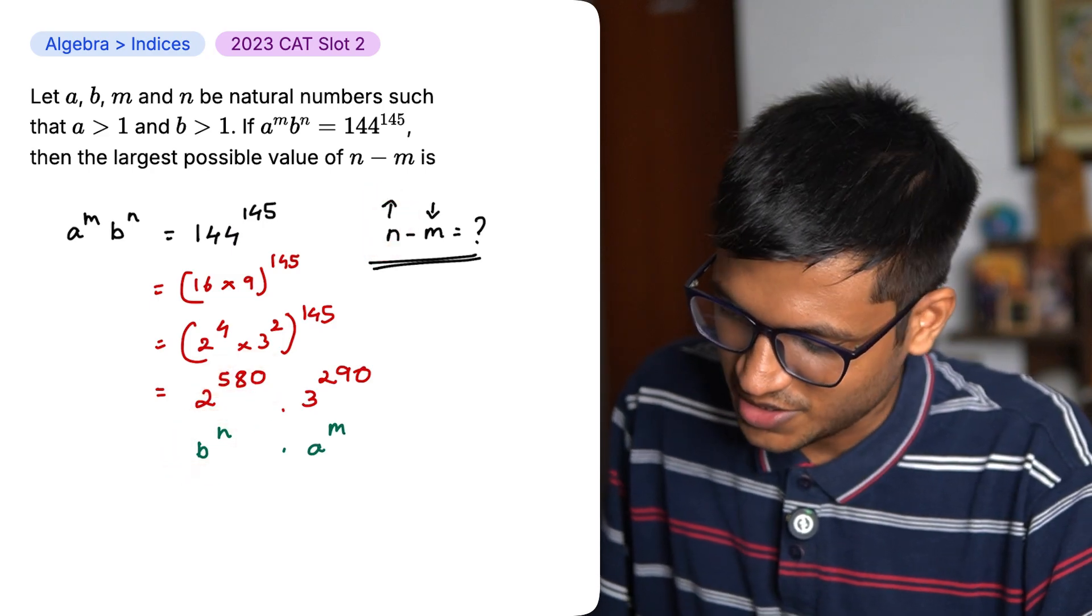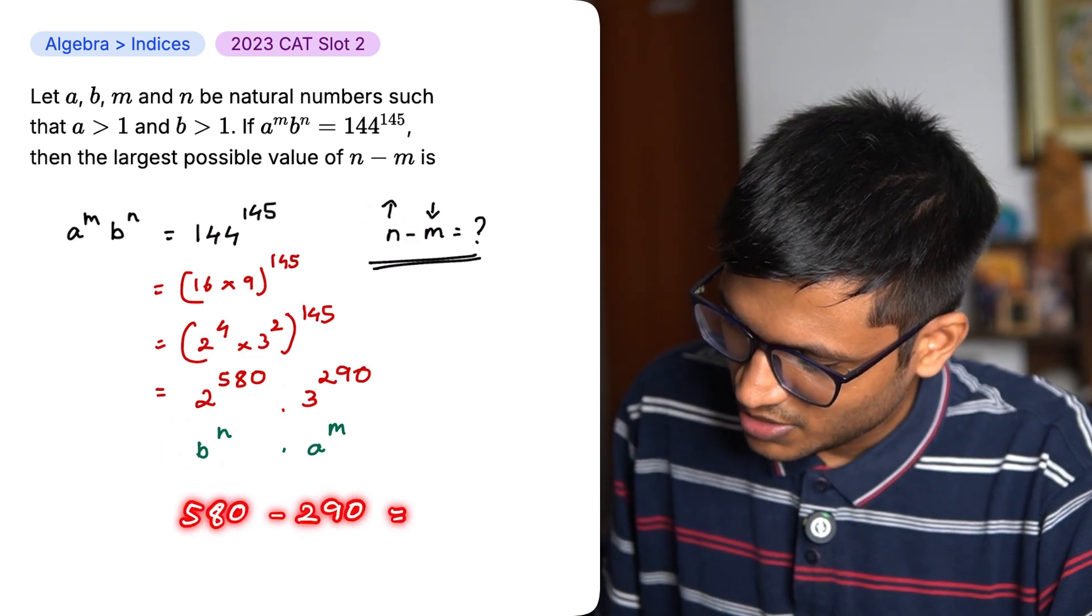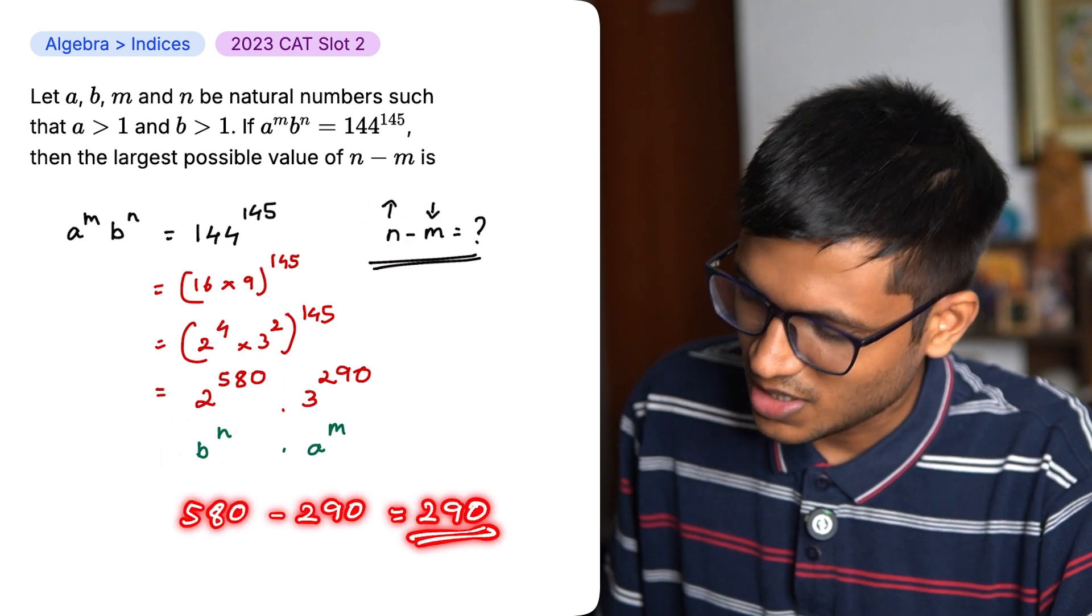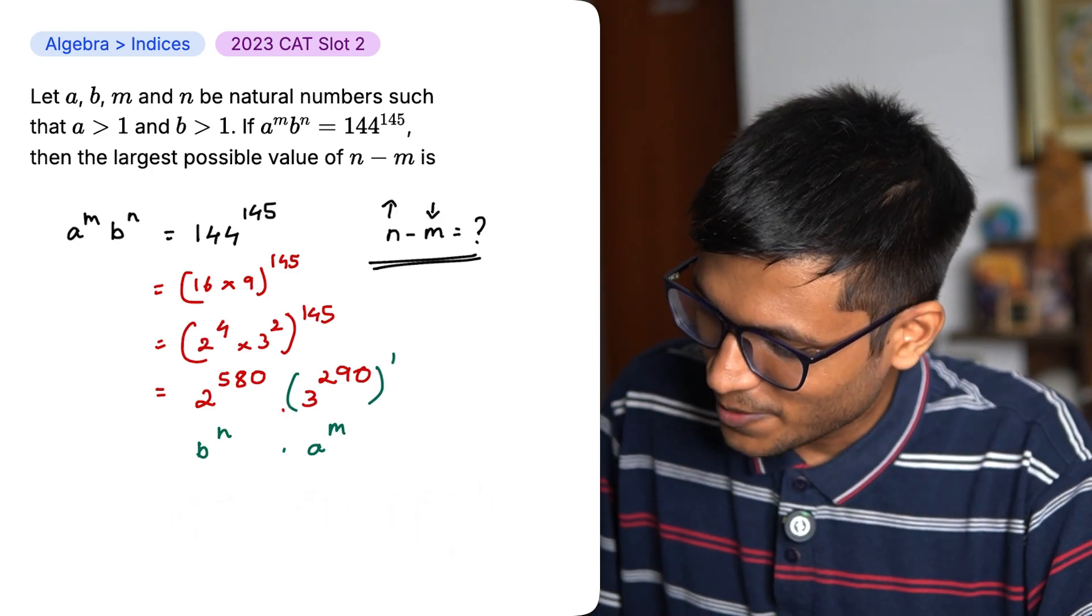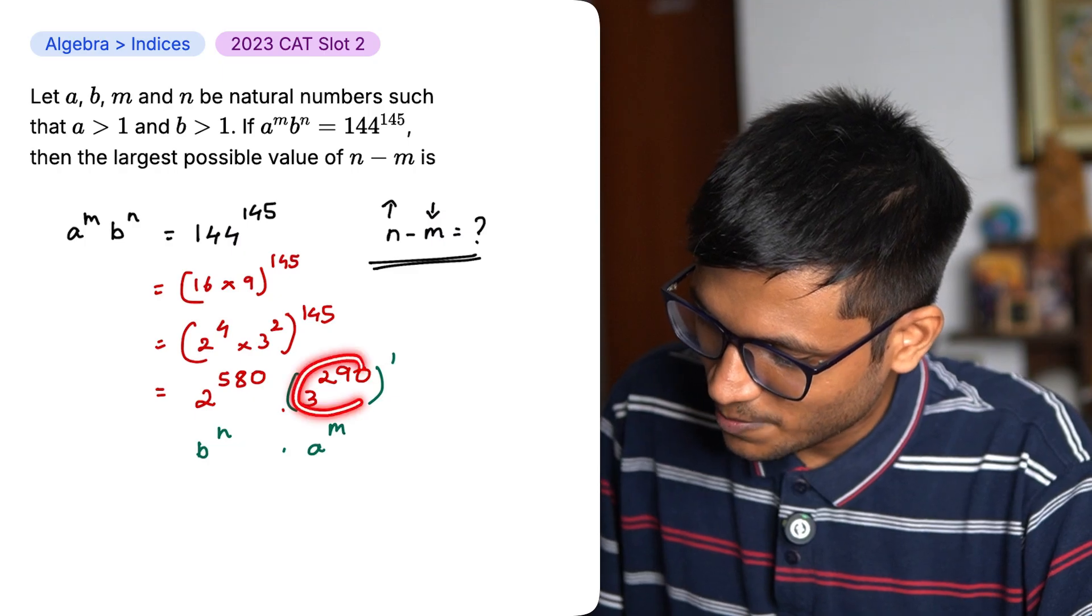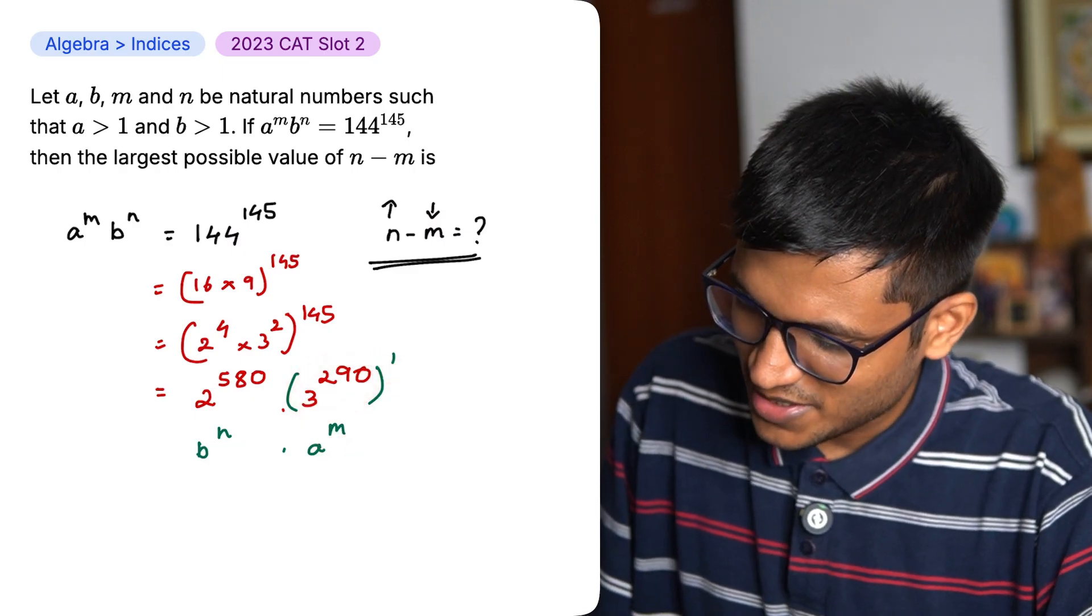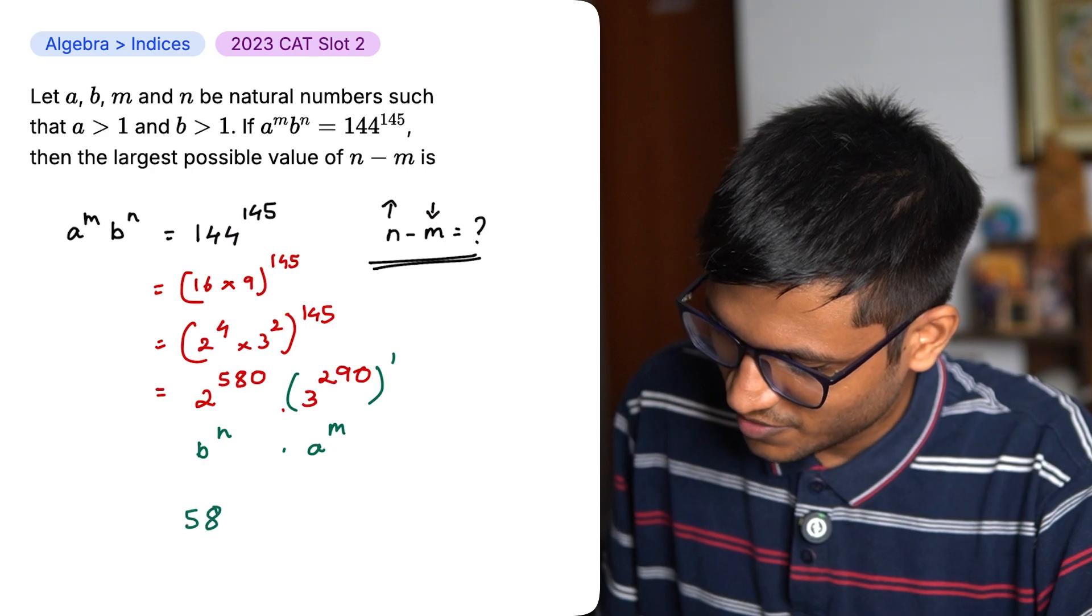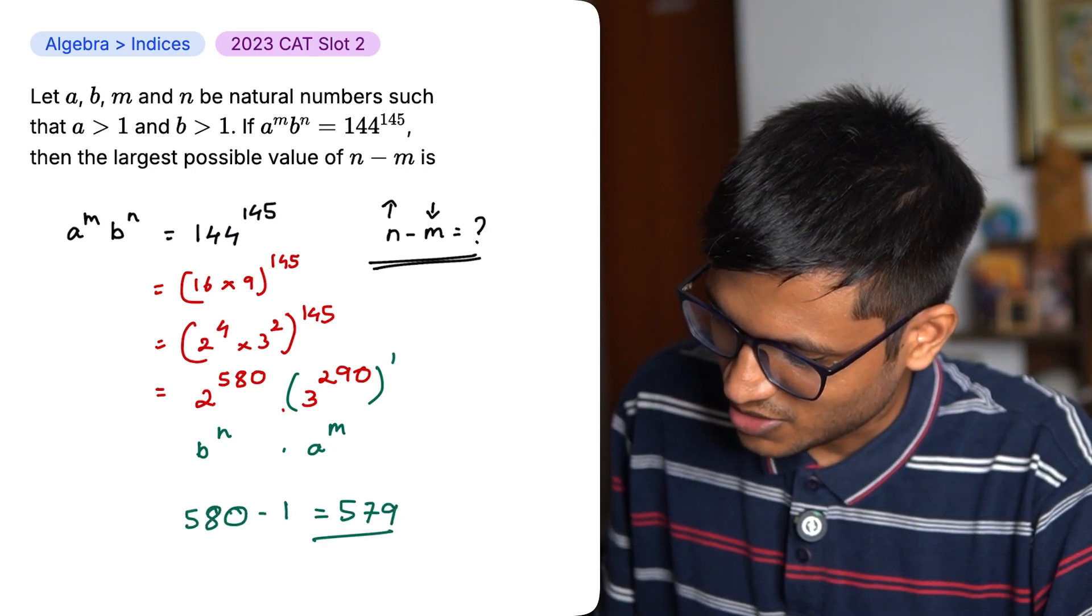Hence, I put b to the power n here. Many students are going to do 580 minus 290 equal to 290 and mark it as the answer. And that is why you make mistakes. This entire 10 to the power 1 can be put. So a is equal to 3 to the power 290 and m is equal to 1. So technically, you can do 580 minus 1 and get 579 as your answer.